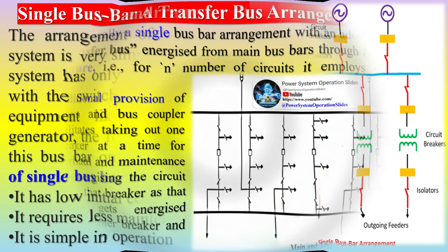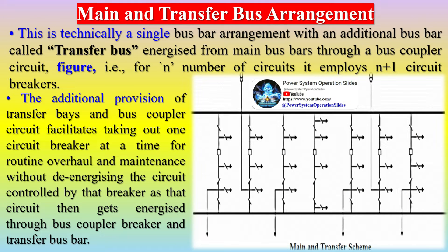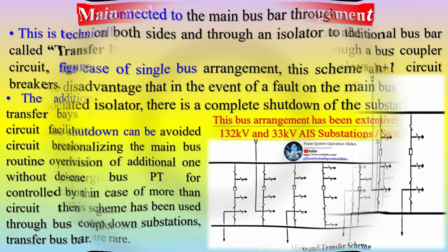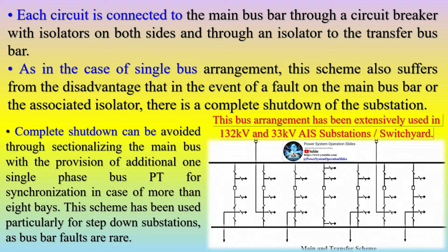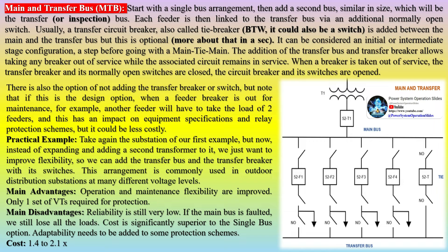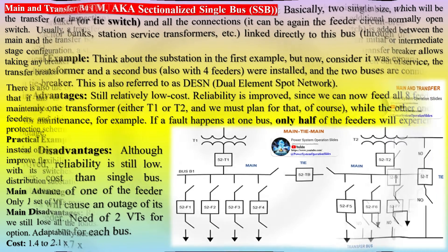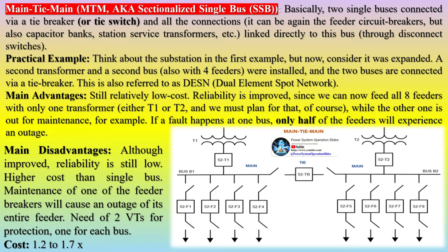The main and transfer bus arrangement is technically a single busbar arrangement with an additional busbar called the transfer bus, energized from the main busbars through a bus coupler circuit — i.e., for n number of circuits it employs n plus one circuit breakers. The additional transfer bays and bus coupler circuit facilitate taking out one circuit breaker at a time for routine overhaul and maintenance without de-energizing the circuit, which then gets energized through the bus coupler breaker and transfer busbar. Each circuit is connected to the main busbar through a circuit breaker with isolators on both sides and through an isolator to the transfer busbar. This scheme suffers from the disadvantage that in the event of a fault on the main busbar or the associated isolator, there is a complete shutdown of the substation.